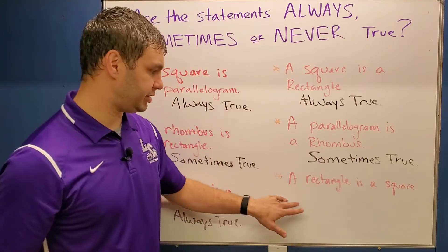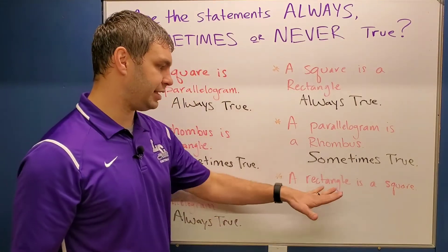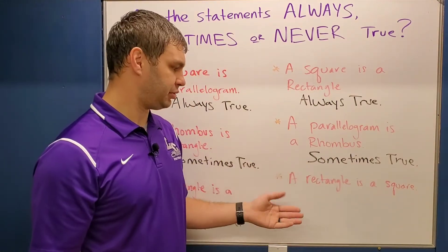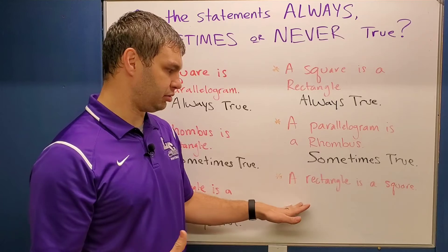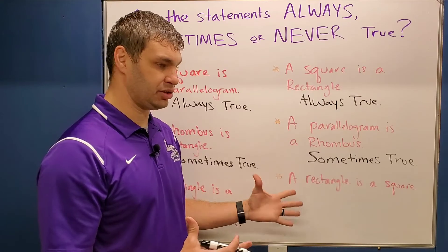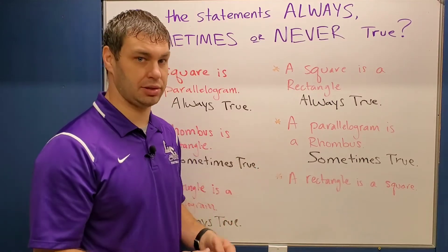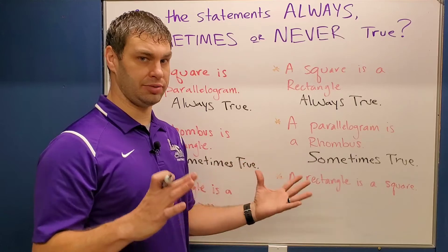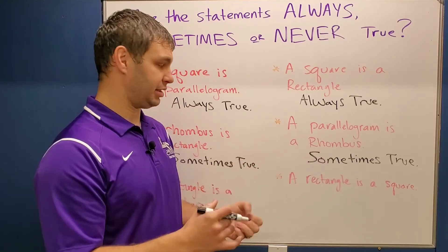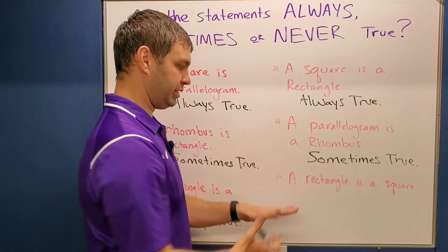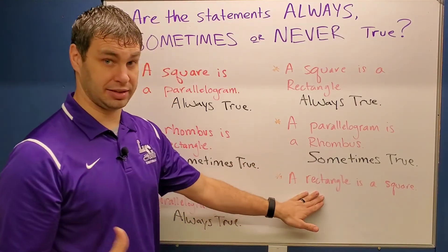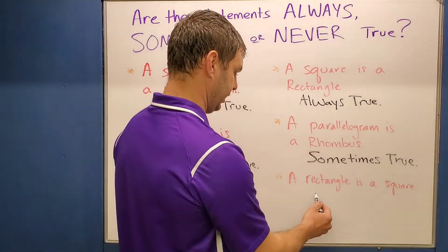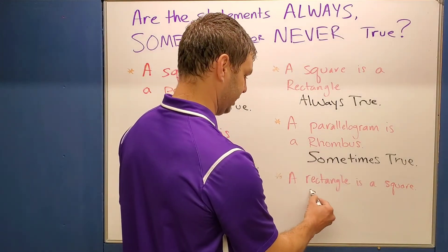This last one says a rectangle is a square. This one's only sometimes true — it's only true when it's also a rhombus. If a rectangle has all of its sides the same, as well as all the properties of a rectangle, then it will be a square. So this one's only sometimes true.